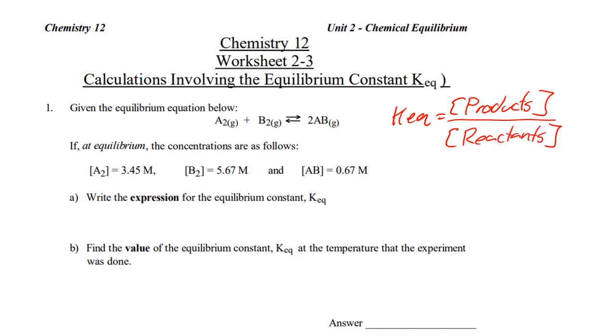Therefore, when we have to write the expression for the Keq constant, Keq is going to equal the concentration of the products, which is going to be AB. Now, there's a coefficient of 2 in front, so it's going to be AB squared, divided by the concentration of the reactants. Since there's no coefficient, or in other words, a coefficient of 1 in front, it just leaves it as A2B2. And that is what is called our expression.